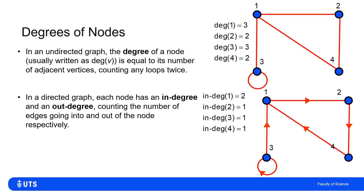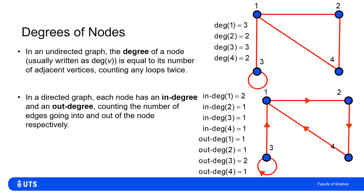Looking at this directed graph, the in-degree is the number of arrows going into a node. For a loop, we don't count it twice — it only goes in once. The only node with more than one arrow going into it is node one. Similarly for out-degrees, node three is the only one with two arrows going out of it: one arrow from three to one, and one arrow going back to itself.